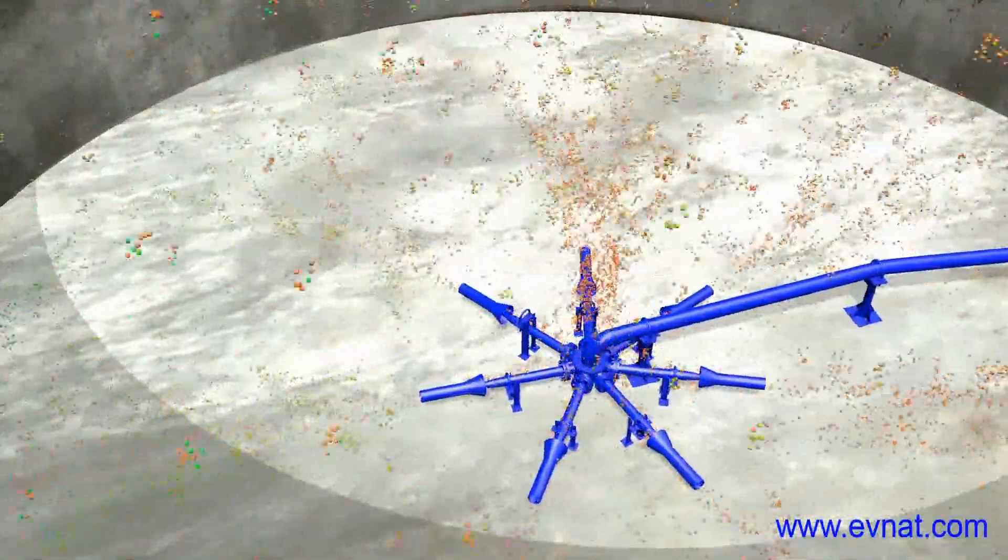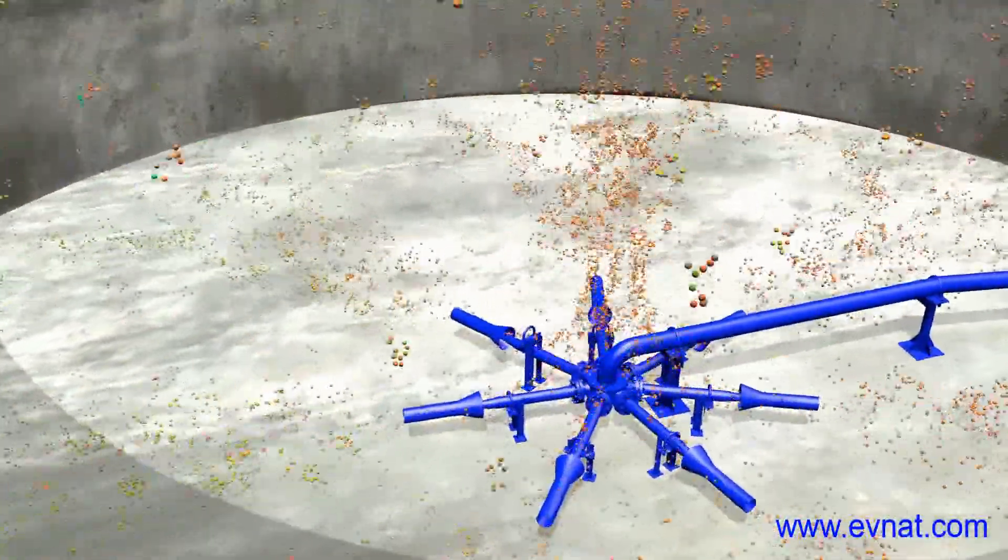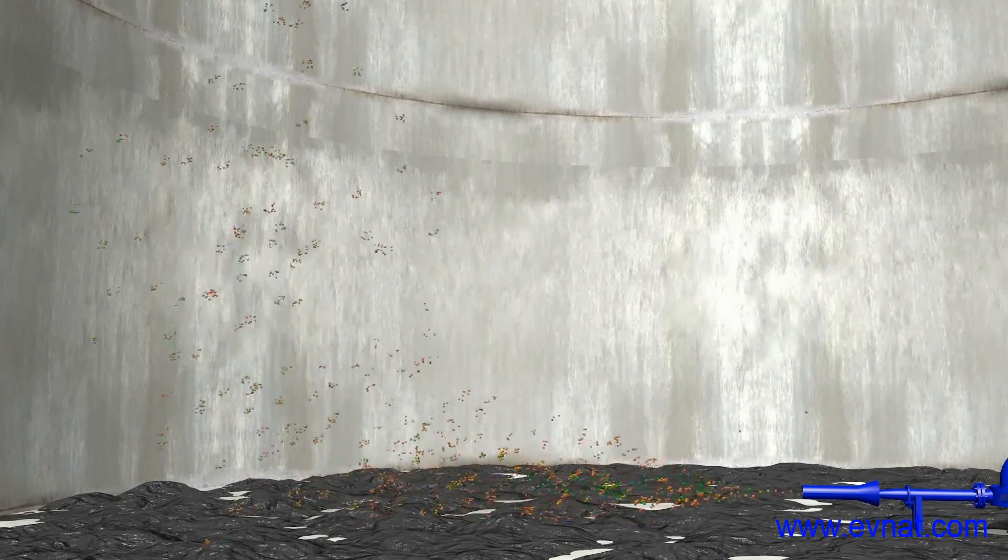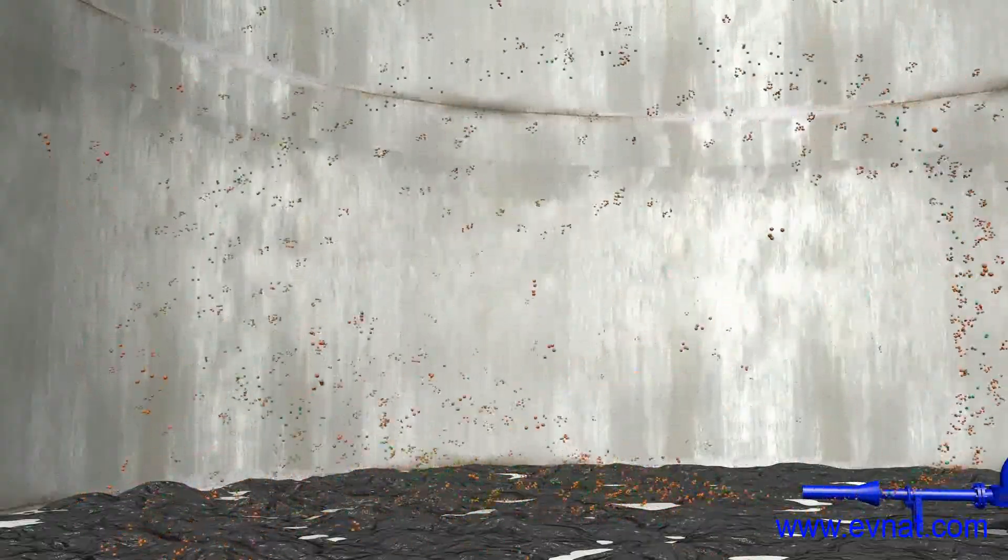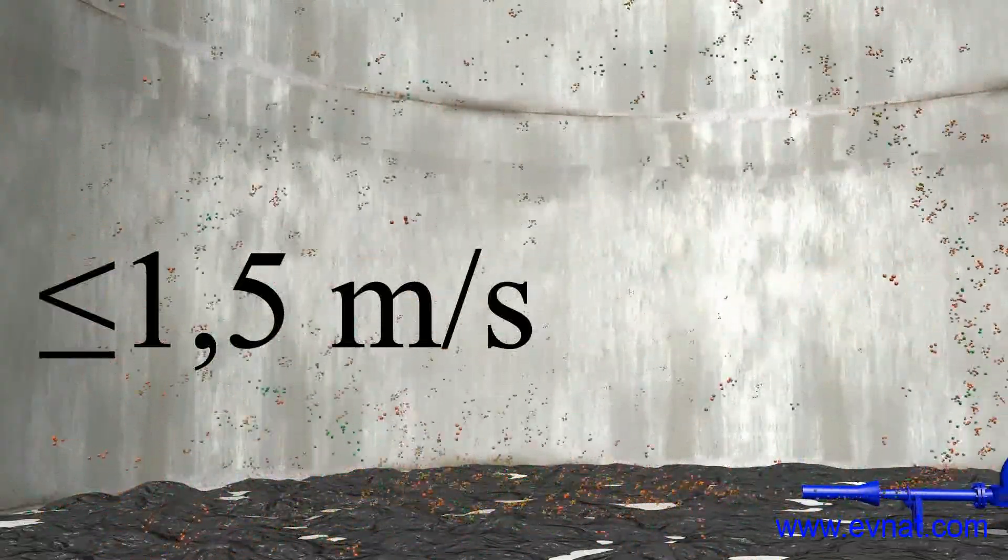The outlet flow speed is sufficient for tearing the precipitated oil sludge particles off the bottom and bringing them into a suspended condition. The jet speed at the tank wall must not exceed 1.5 meters per second.